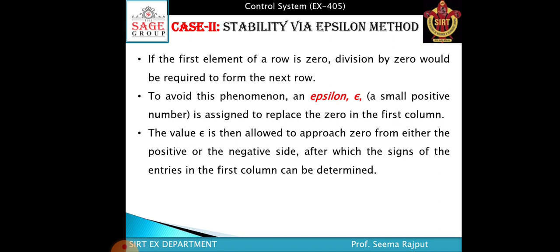Stability by epsilon method: if the first element of a row is 0, division by 0 would be required to form the next row. To avoid this, epsilon — a small positive number — is assigned to replace the 0 in the first column. The value of epsilon is then allowed to approach 0 from either the positive or the negative side, after which the sign of the entire entries...